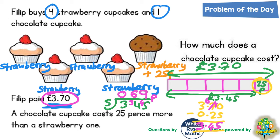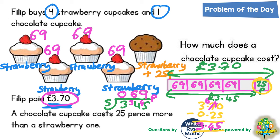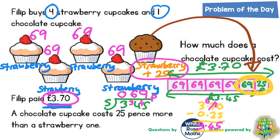So if a strawberry cake is 69p, that's the four strawberry cakes at 69p each. But a chocolate cake was a strawberry cake plus 25p, as noted. So it would be 69p plus the extra 25p. What is 69p plus 25p? 9 plus 5 is 14 — put the four in, carry the one. 6 plus 2 is 8, plus the one carried is 9. So that's 94p. A chocolate cake must be 94p.